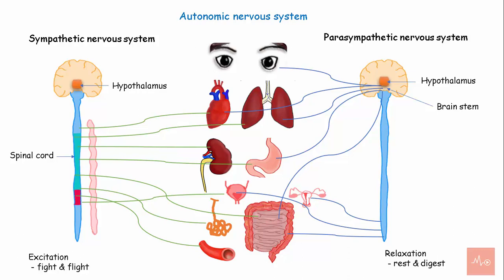The hypothalamus processes sensory impulses received from visceral organs and regulates functions like the movement of food, heart rate, contraction of the bladder, along with respiration and sexual arousal.